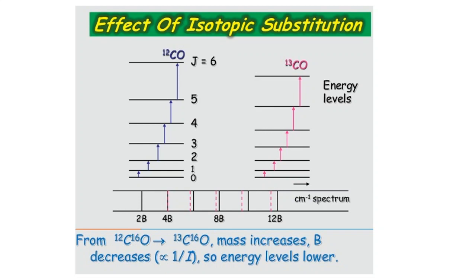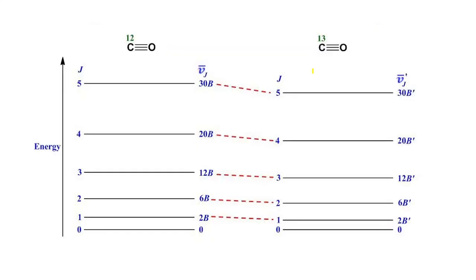For example, at J = 6, the energy level for ¹²CO and ¹³CO can be compared — they have the same J quantum number but different energies. The energy levels are 0, 2B, 6B, 12B for J = 0, 1, 2, 3 respectively, so they scale as B·J(J+1).